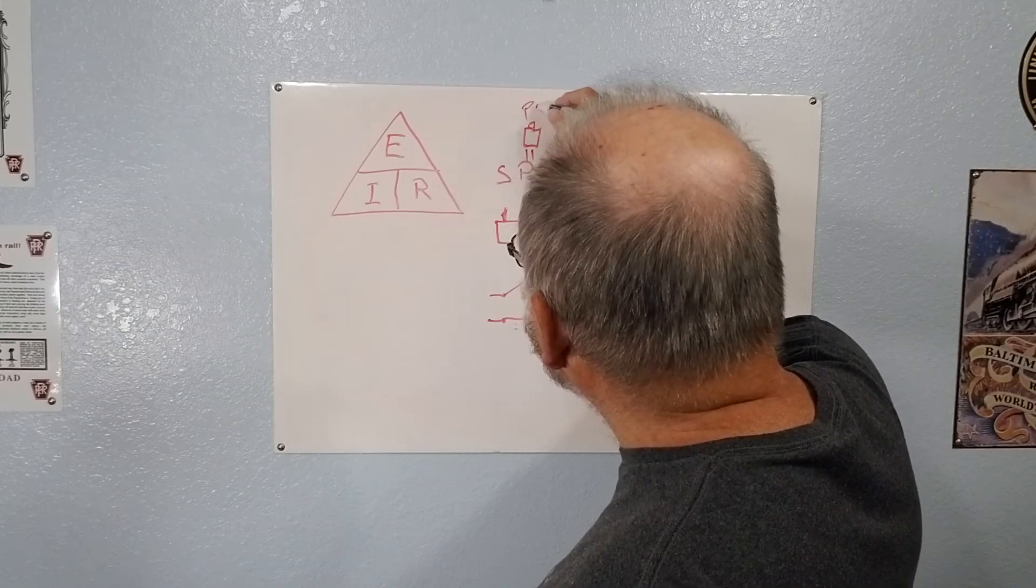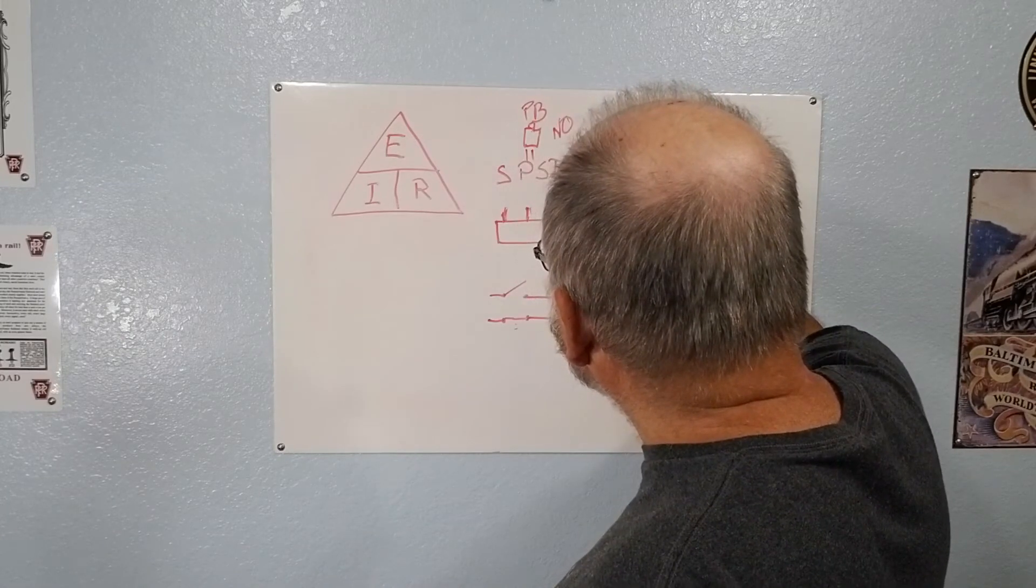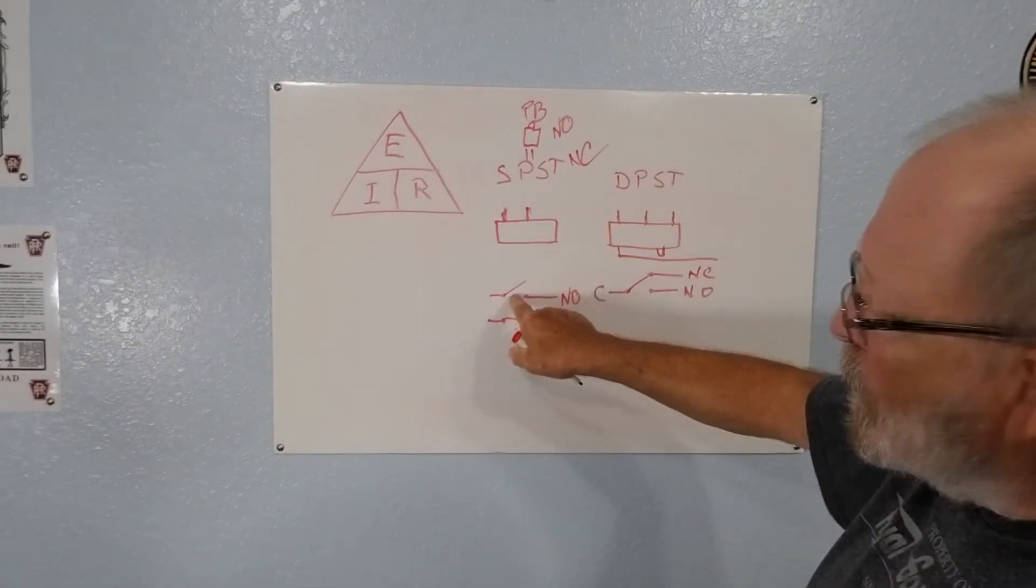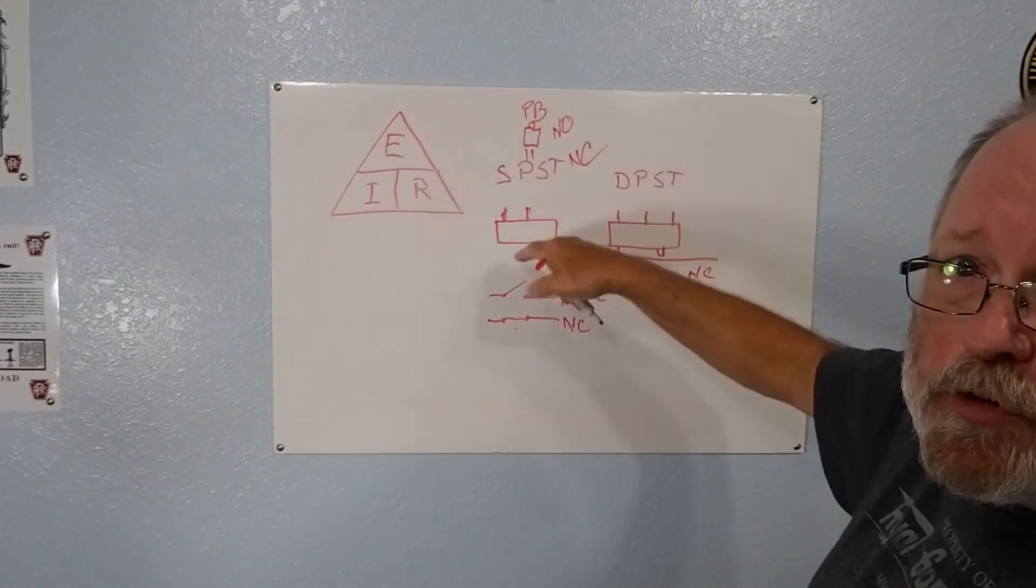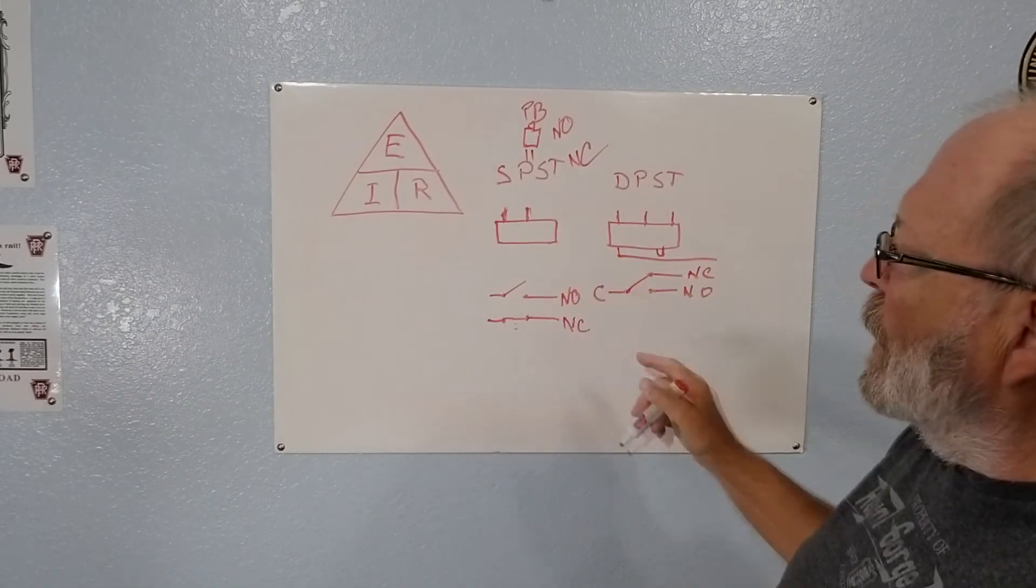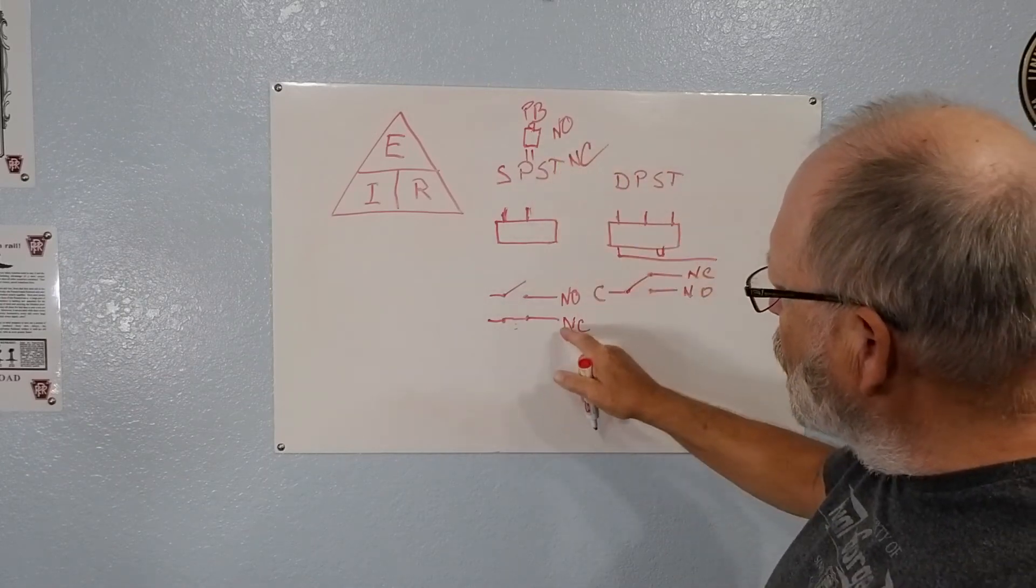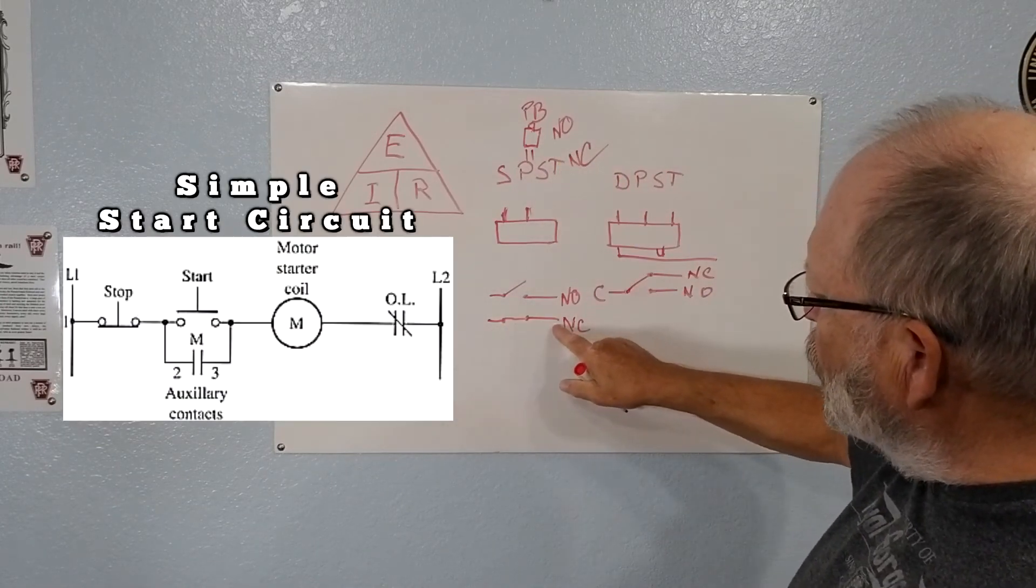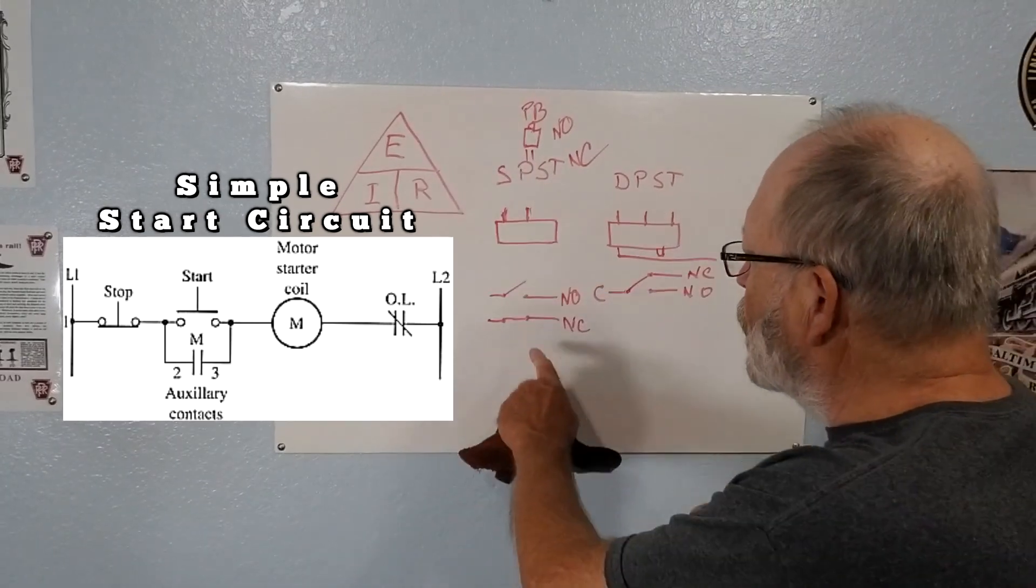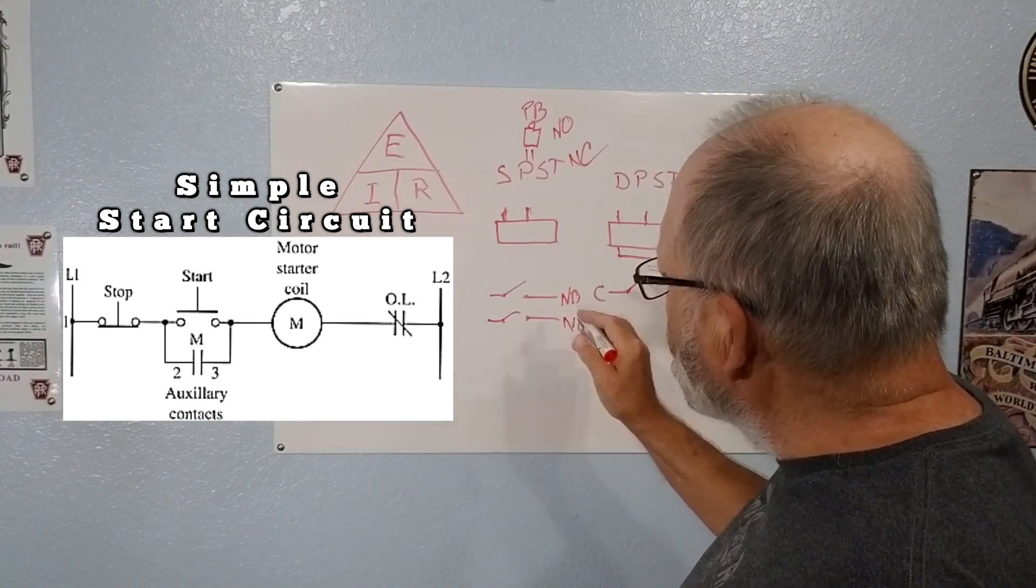There is a push button and you have normally open push buttons and normally closed push buttons. On the normally open push button you have an open circuit there so when you push the push button in it closes the circuit. When you have a normally closed push button you have continuity normally and then when you push the button you break that continuity and it opens up. So that's the difference between normally closed and normally open.